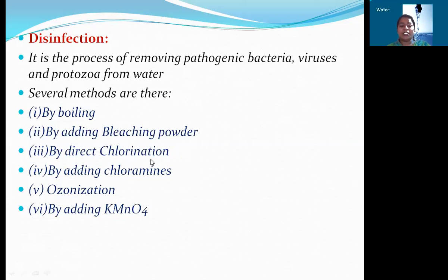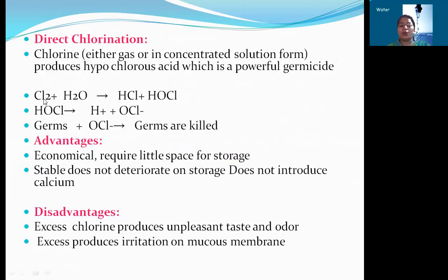Next, direct chlorination. In the chlorination process, we use chlorine gas. This chlorine gas reacts with the water and forms hypochlorous acid. This hypochlorous acid is a strong disinfectant and it reacts with germs and kills them. What is the advantage of this chlorination? It is economical and requires little space for storage, is stable, does not deteriorate, and storage does not introduce calcium. This is the advantage of direct chlorination.